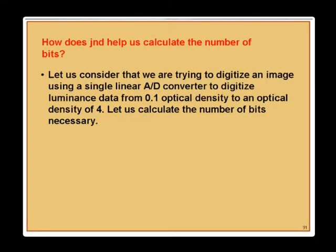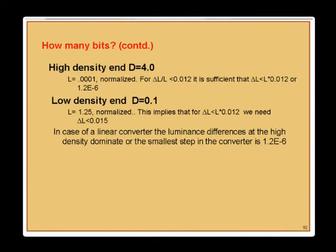Consider digitizing luminance data from 0.1 to 4.0 optical density using a linear A-to-D converter — as seen in mammography, which has a very high dynamic range. The calculations show the smallest required step is about 1 in a million, meaning a 20-bit converter would be needed, which is impractical at the required speeds. A log amplifier before the converter could reduce this to a 10-bit converter, or overlapping converters with curve fitting could be used.